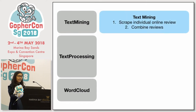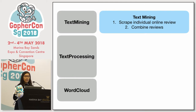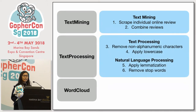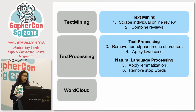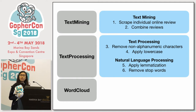For text mining, it includes scraping individual online reviews about Go and combining them for text processing. For text processing, it includes removing non-alphanumeric characters and applying lowercase. These are done to normalize the text so that we can do further analysis. For natural language processing, it includes applying lemmatization and removing stop words. Lemmatization basically refers to transforming words to their base or dictionary form using a dictionary and morphological analysis of words.